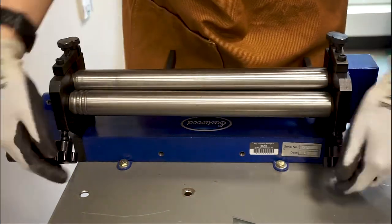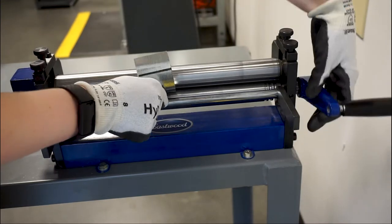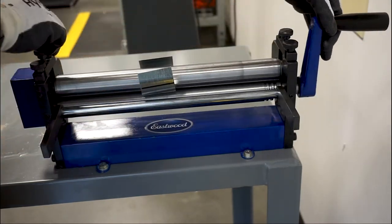The tighter the roll diameter knobs, the smaller the diameter of the cylinder or cone you will be able to create. Use the material adjustment knobs to loosen the top roller and slide the material between the two rollers.